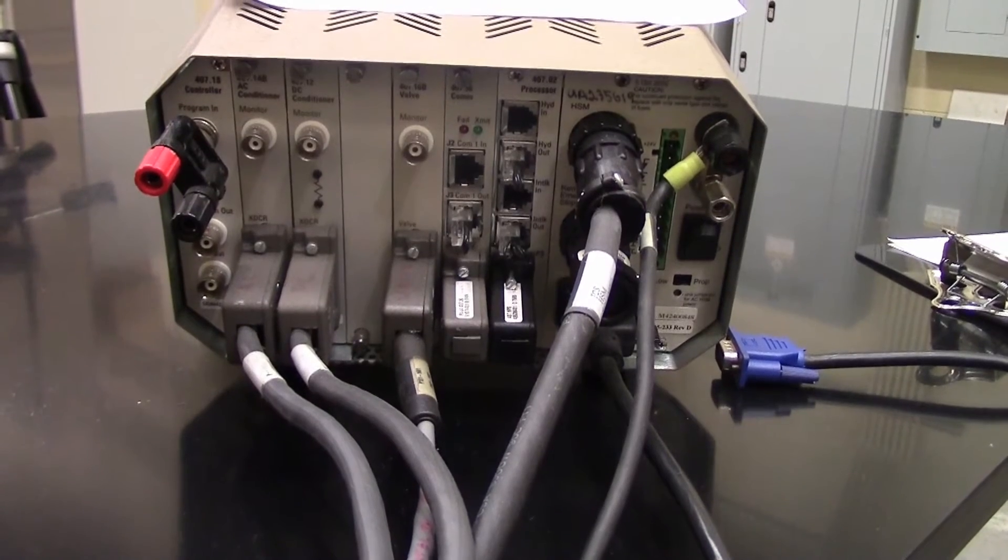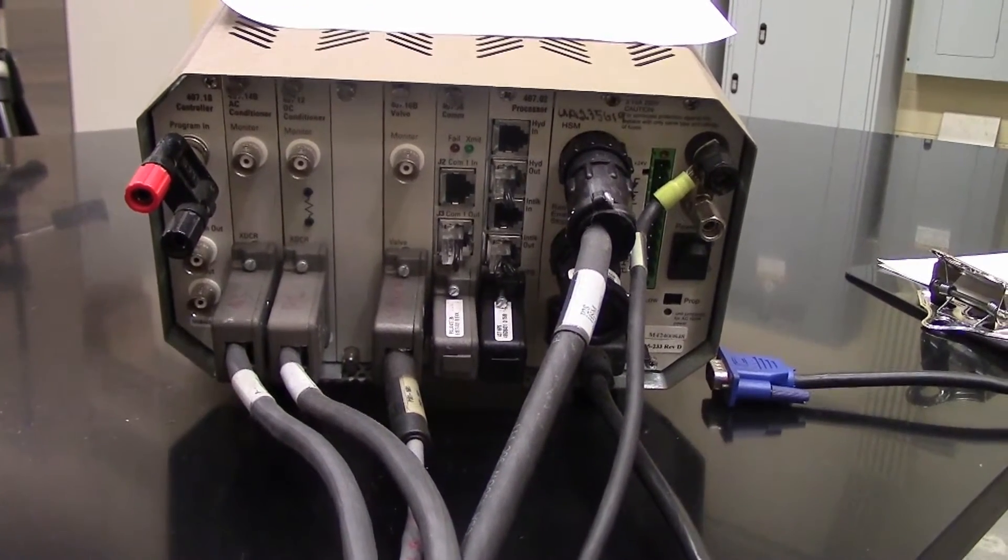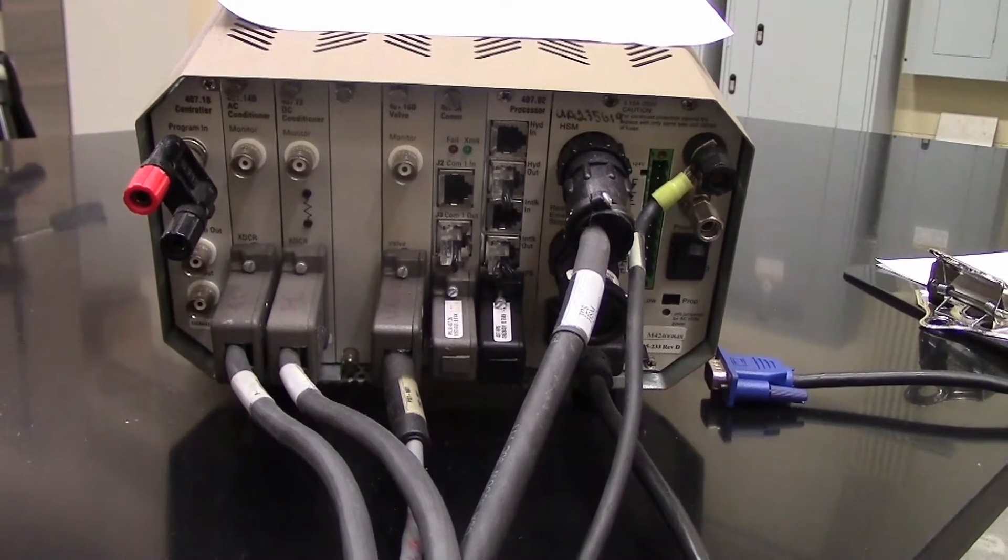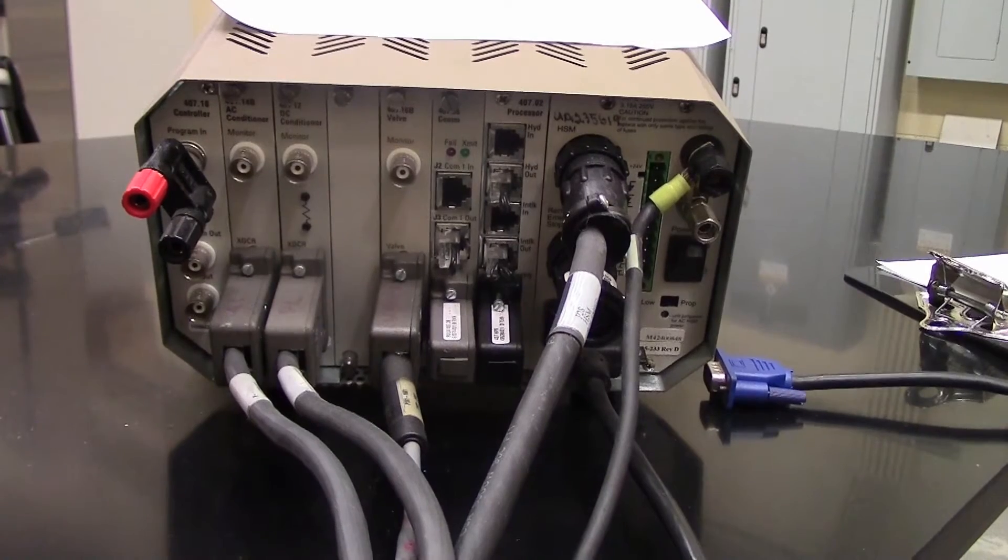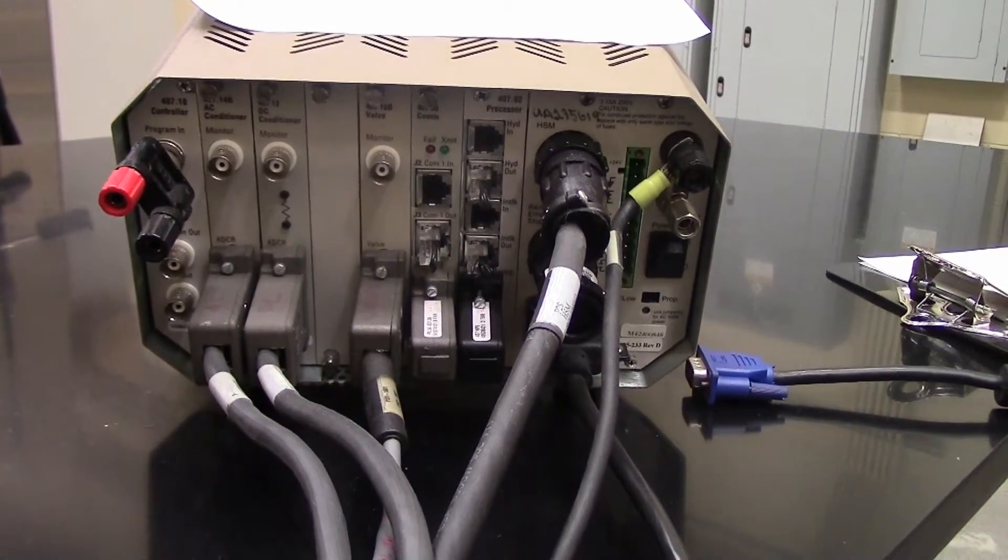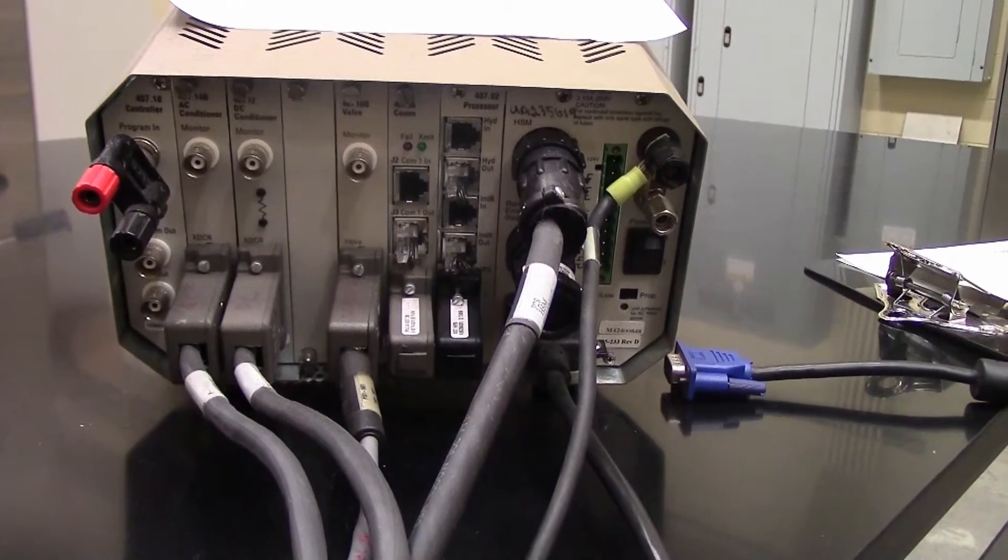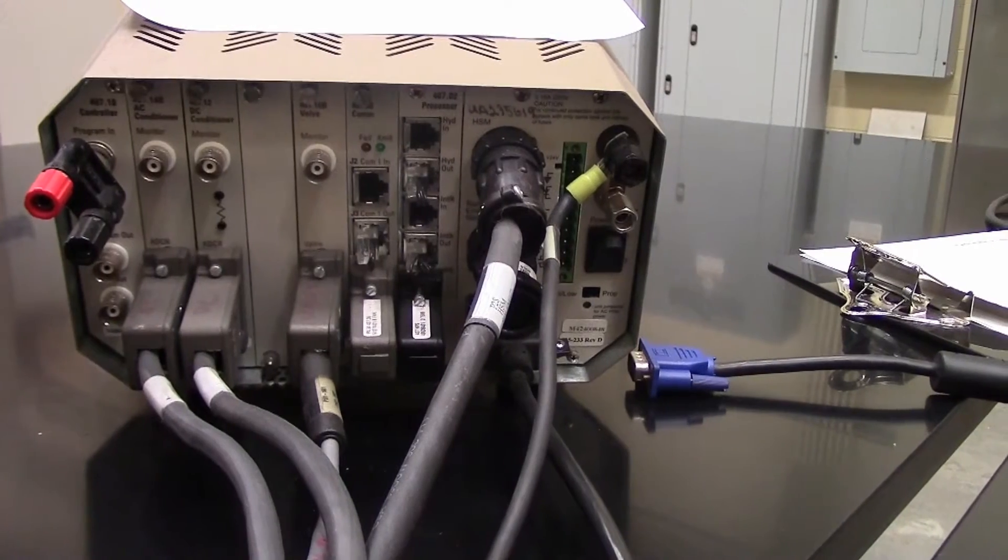It has these different cards - the 407 conditioner with an AC conditioner and a DC conditioner. AC is for the LVDT, the DC is for the load, so it's got an empty panel, a valve driver, and a communications card. That's what those Ethernet cables are for.